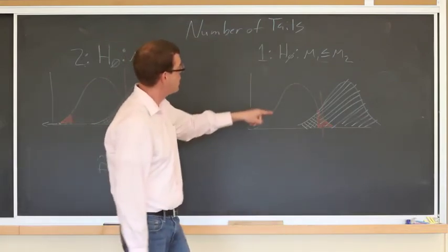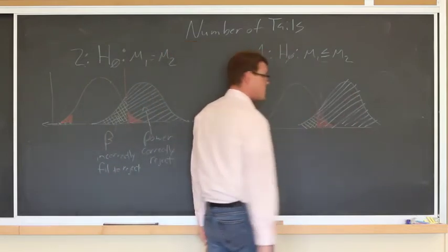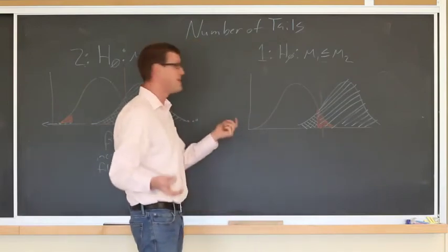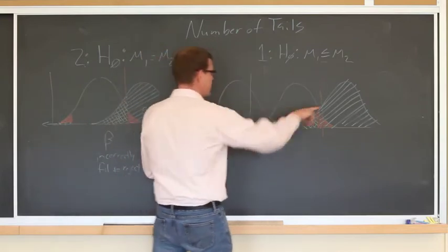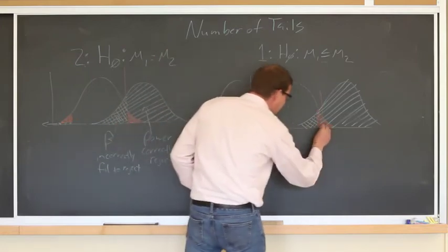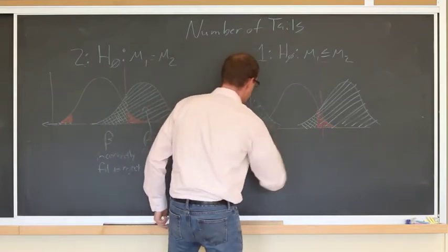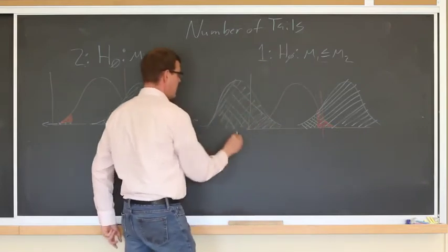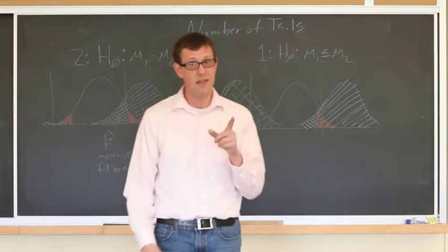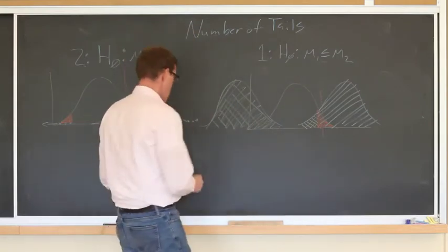You should only do this when you have a reason before you analyze the data to expect that the mean will be in this direction. If we were interested in means in both directions but only used the one-tailed alpha on one side, we would have a huge probability of making a Type 2 error and really tiny power for that situation. Use one-tailed alpha when you're justified to do so based on your pre-existing knowledge, and don't do it otherwise.